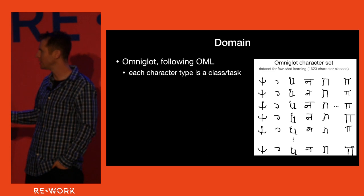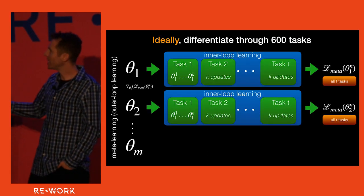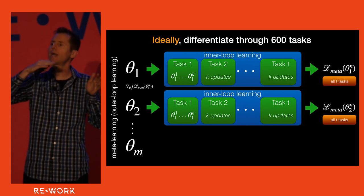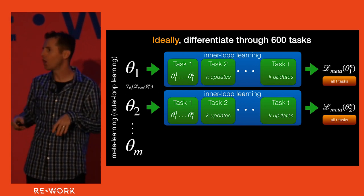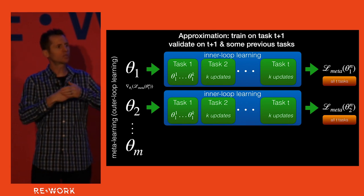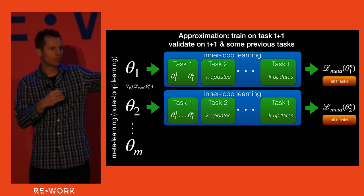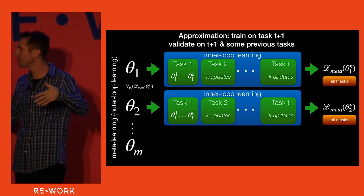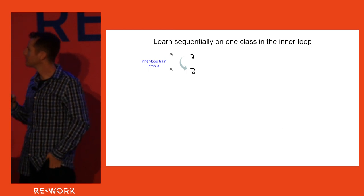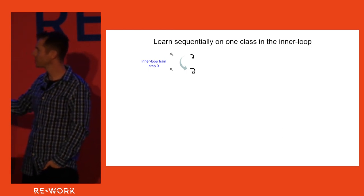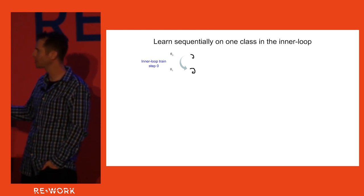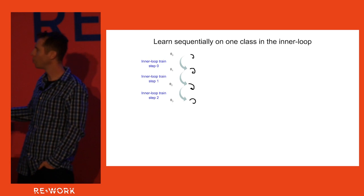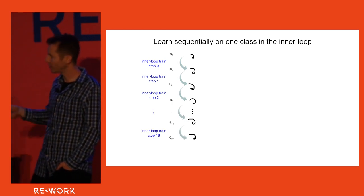We're going to run this on Omniglot. You have to learn one class of characters, then another class, then another. Ideally, you'd differentiate through 600 tasks, learn 600 things in a row, differentiate all the way back, and take a gradient step — but that's not possible. The OML paper came up with a good approximation: learn one new task, and then check whether you know that task plus a random sampling of previous tasks you've seen, because that means you learned the new thing without messing up things you already know.